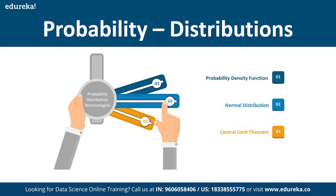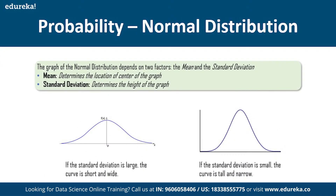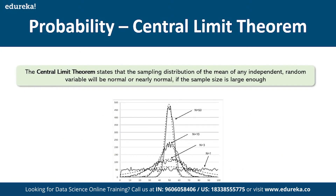In terms of how this applies to data science: whenever you are given a dataset, you try to see whether your data fits a normal distribution. Based on that, you predict the mean, standard deviation, and so on. When you plot the data using a line chart and get a bell curve, that means your mean and standard deviation are centered in the middle — that's how you interpret the data.